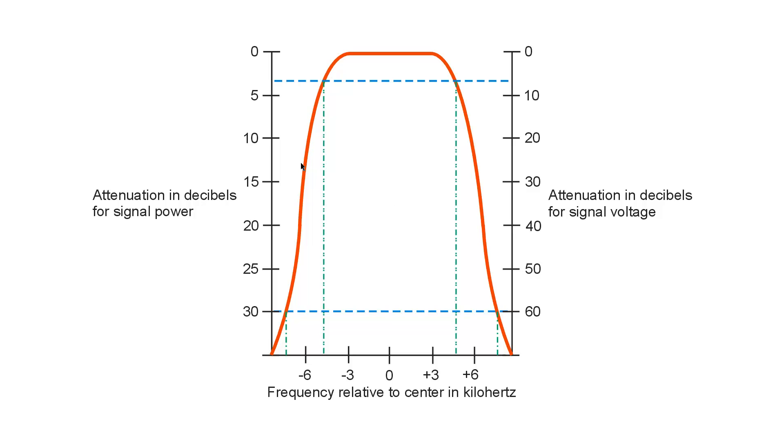The skirt selectivity is a general term for how rapidly these transitions from zero attenuation to large values of attenuation, how rapidly that falls off. The more rapidly the drop-off, the steeper the skirts. And that's a general term, not a specific or quantitative term. It's a qualitative term.